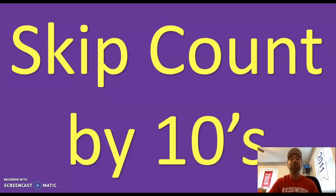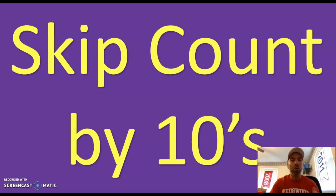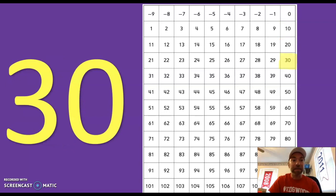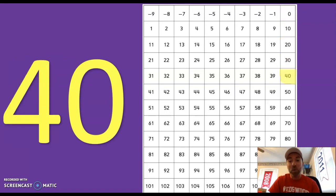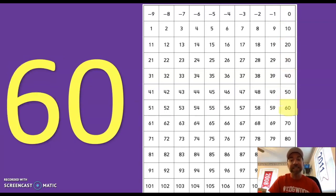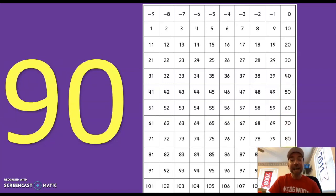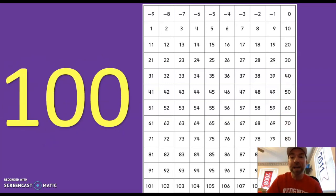Up next we're gonna practice skip counting by tens. We're gonna start at zero and we're gonna go all the way up to 100. Here we go: 0, 10, 20, 30, 40, 50, 60, 70, 80, 90, 100. Awesome job!